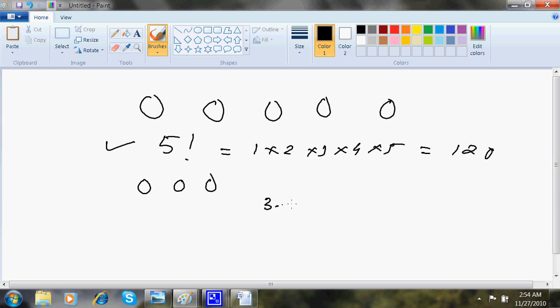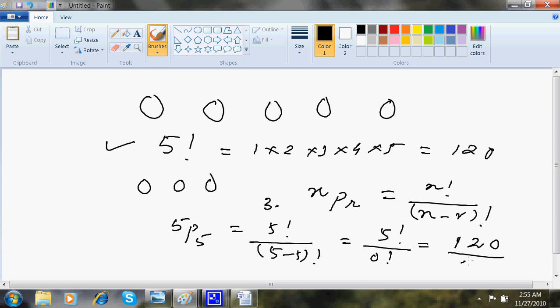Now, this is the second way that I can. The third way is also there. There is a formula to this. NPR is N factorial by N minus R factorial. So, here what I was doing is 5P5. This is 5 factorial by 5 minus 5 factorial. This is 5 factorial by 0 factorial. 5 factorial is 120. 0 factorial is mathematically taken to be 1. This is 120.